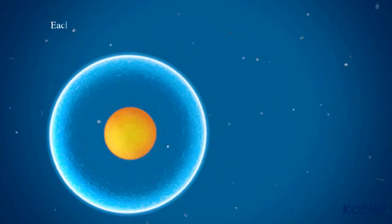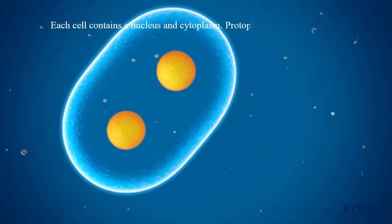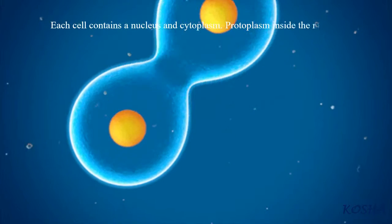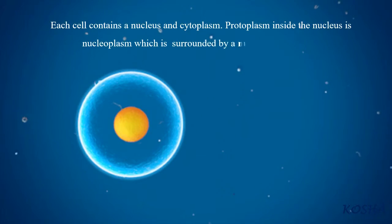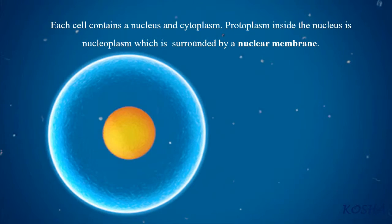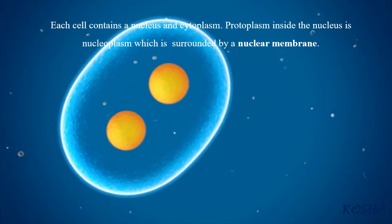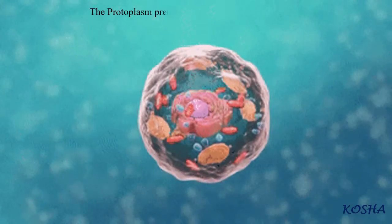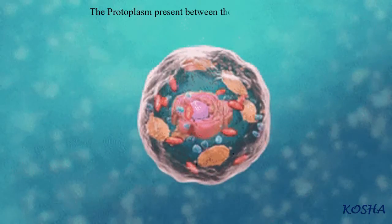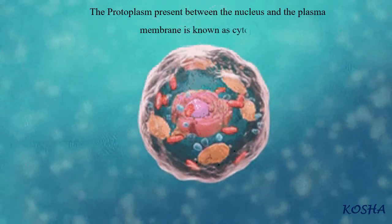Each cell contains a nucleus and a cytoplasm. Protoplasm inside the nucleus is nucleoplasm, which is surrounded by a nuclear membrane. Protoplasm present between the nucleus and the plasma membrane is known as cytoplasm.